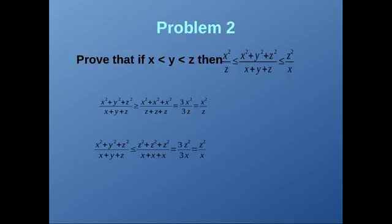The denominator is x + y + z; we need to increase it to decrease the whole fraction. By substituting x and y with z, we get the denominator as 3z. Now 3x² / 3z = x²/z, and since 3x²/3z is a lower bound, we get (x² + y² + z²)/(x + y + z) > x²/z. For the upper bound, substitute x² and y² with z² to increase the numerator, and substitute y and z with x to decrease the denominator, giving 3z² / 3x = z²/x. Hence (x² + y² + z²)/(x + y + z) < z²/x.